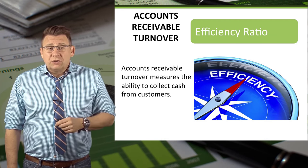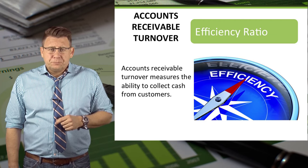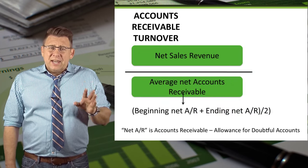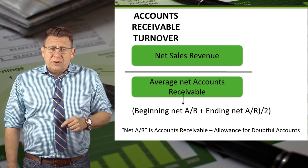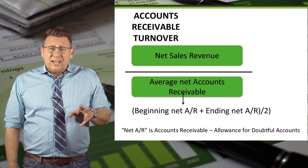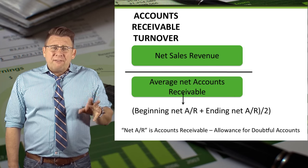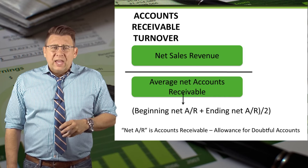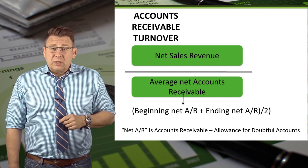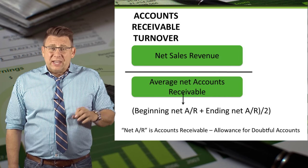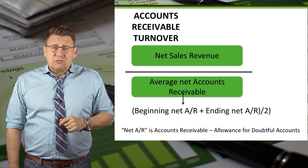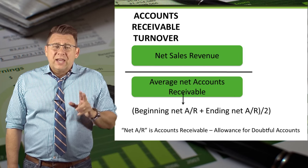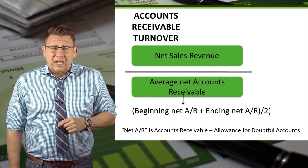Accounts Receivable Turnover is a measure of efficiency. The formula is net sales revenue divided by the average net accounts receivable. Average net accounts receivable is calculated by taking the beginning net accounts receivable plus the ending net accounts receivable and dividing by 2.